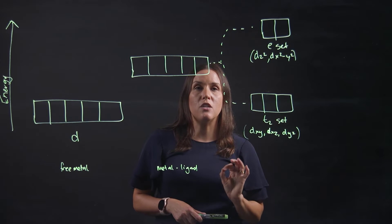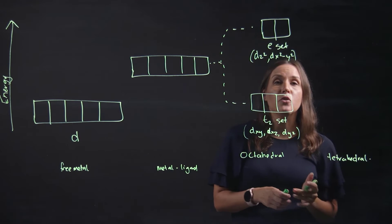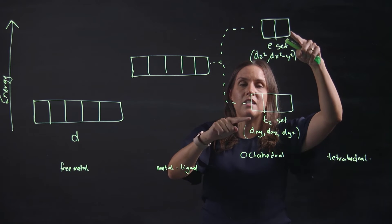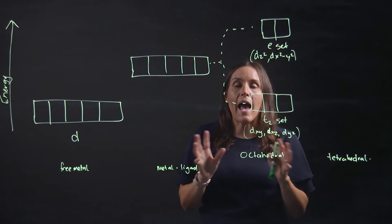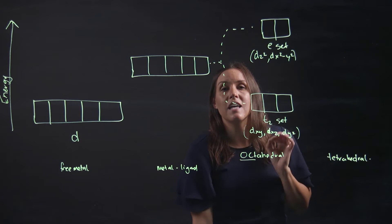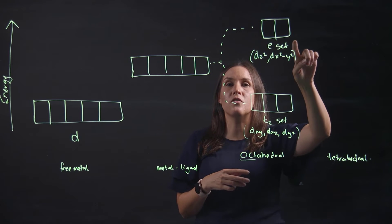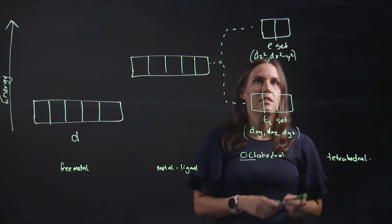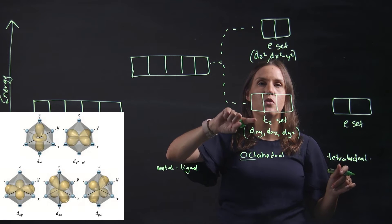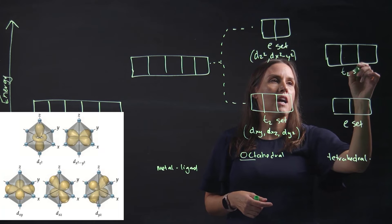For the tetrahedral complex — remembering that you go down from six ligands to four — what actually happens is the E set and the T2 set swap. In an octahedral complex we have six ligands; in the tetrahedral we have four. It shifts so that the orbitals originally pointing towards the ligands are now between the ligands, so the E set sits at a lower energy level, and the T2 set is now at the higher energy level, pointing directly towards the ligands.